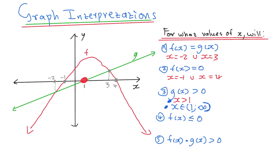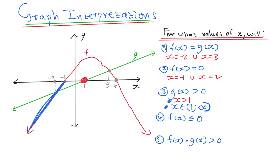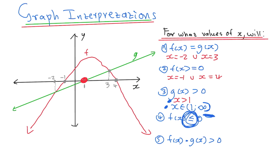Number 4 is where f of x is less than or equal to 0. Let's look at f of x. We can see it's on the negative side of the y-axis on this side and on this side. They said less than 0, which means we look at where it's negative — meaning under the x-axis. So we can see that f of x is negative here and here.